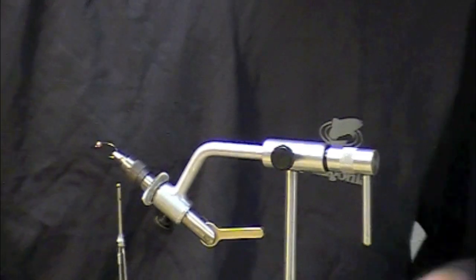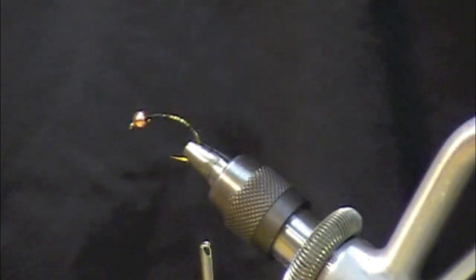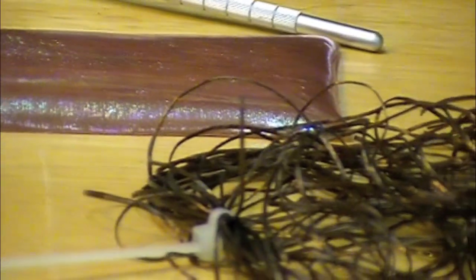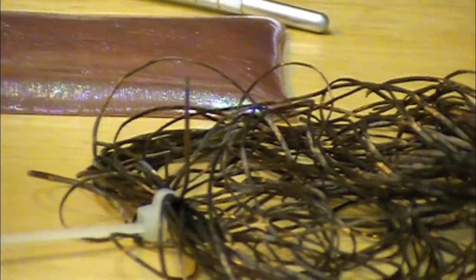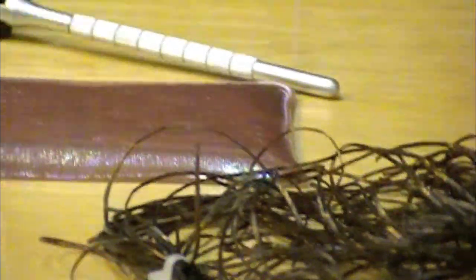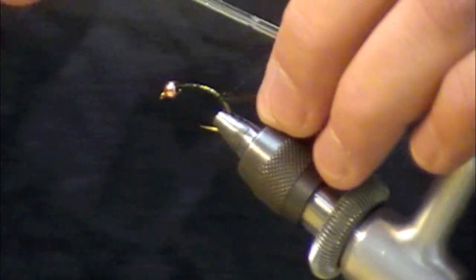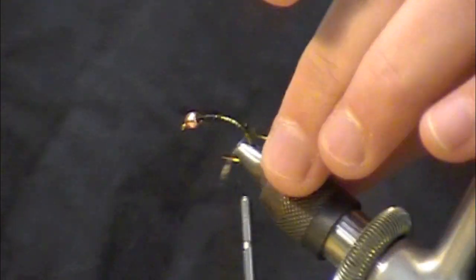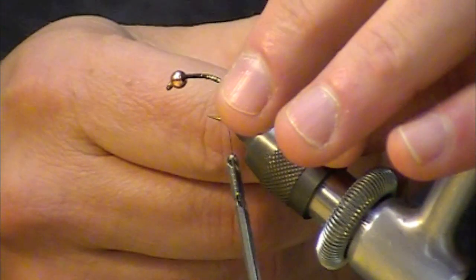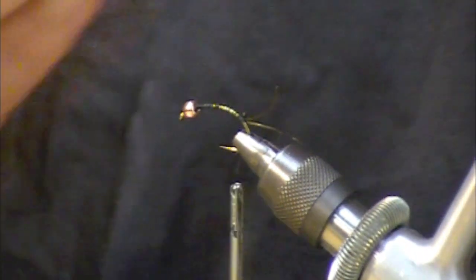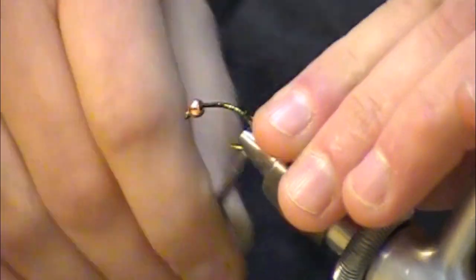I've got some pre-cut pieces here of LifeFlex. It's a spandex leg material. It is the one rubber leg product that will really last for an extended period of time without degrading. So I'm going to tie in a tail at the rear of the hook. I've got just a couple little tails sticking off the back.